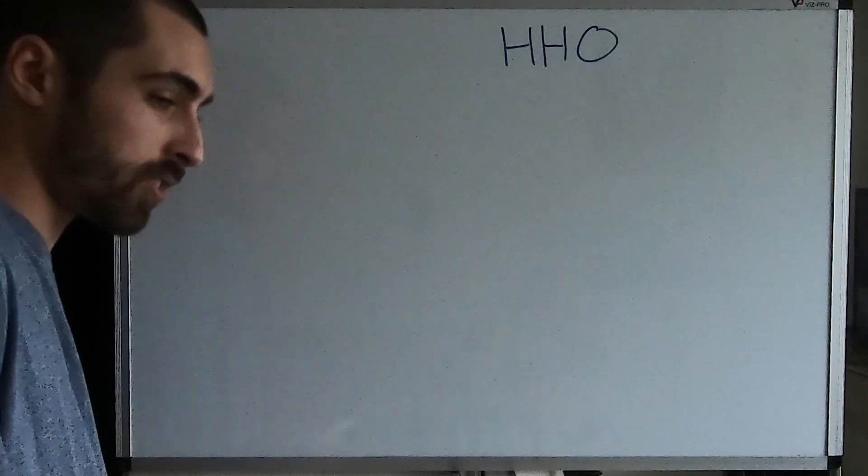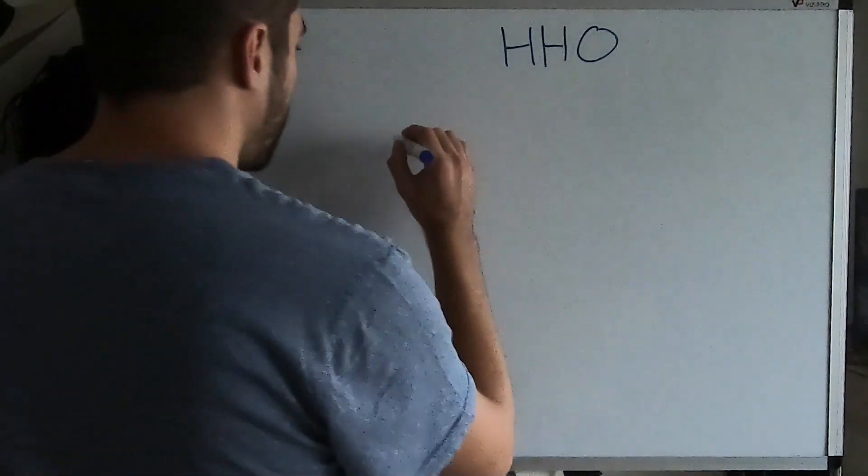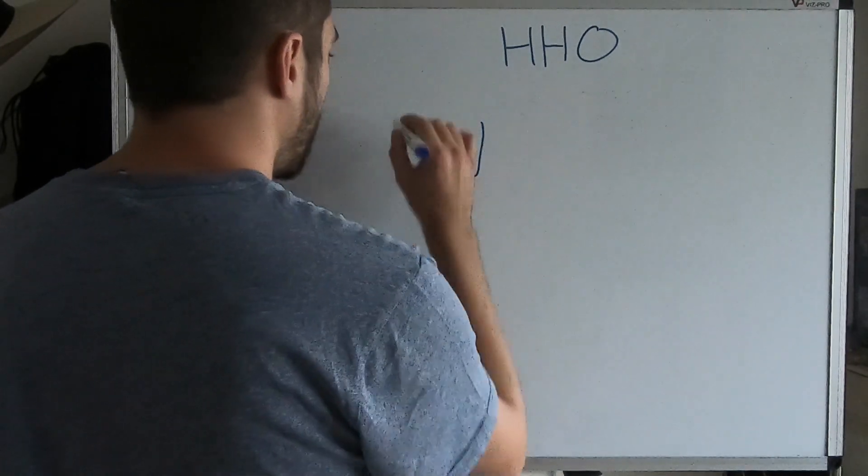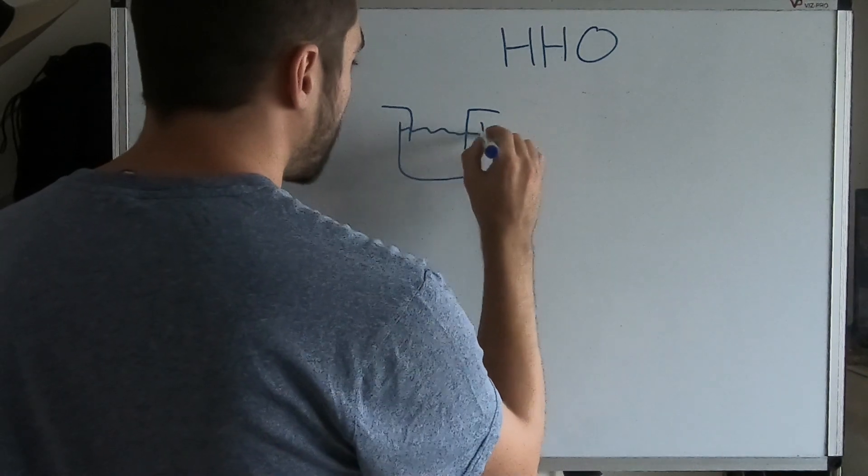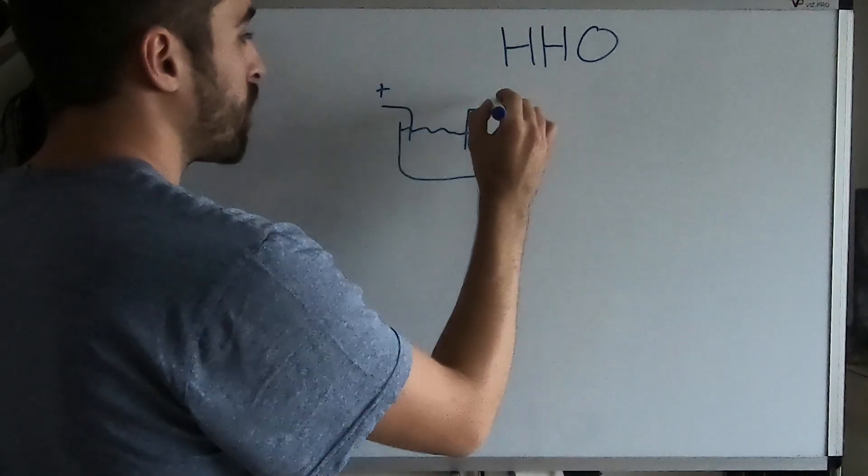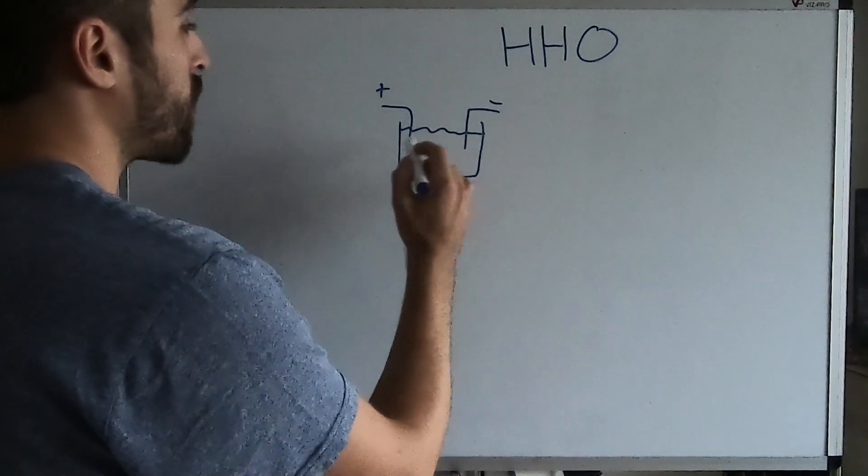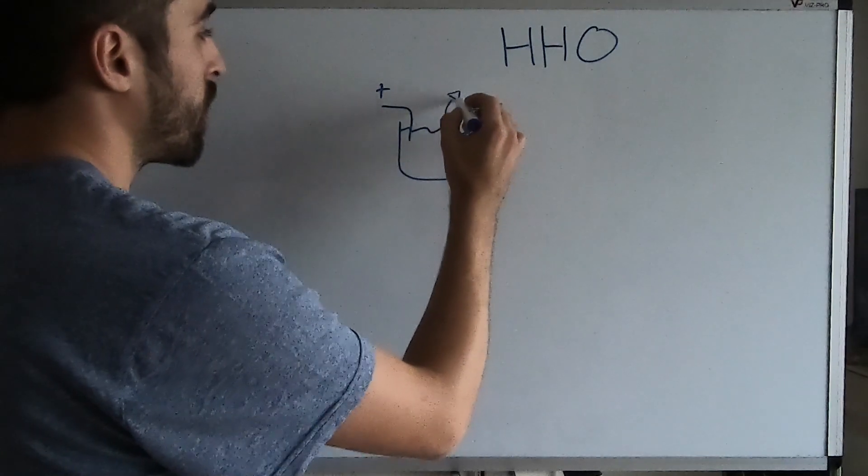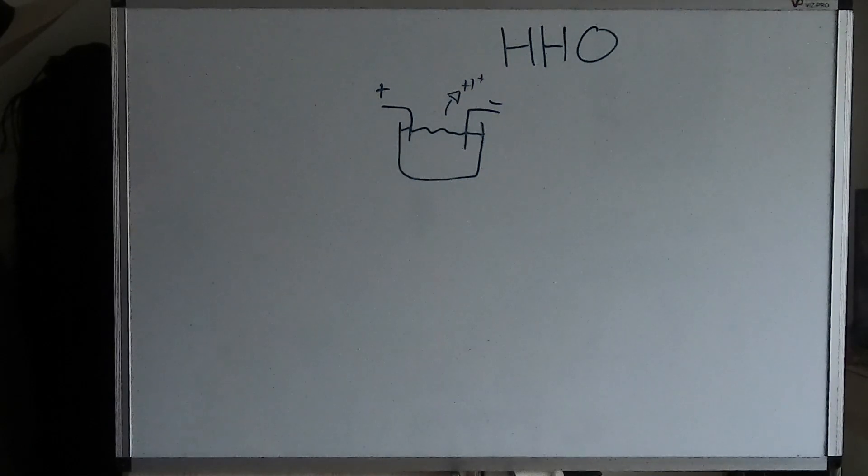So what an HHO generator is, it's just basically a container which has two electrodes. Container full of water, has two electrodes, one plus, one minus. And that electrolyzes the water and creates hydrogen.